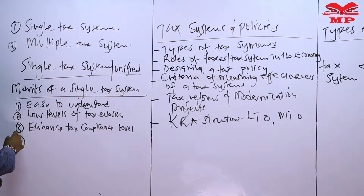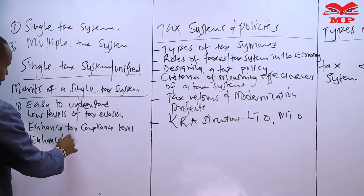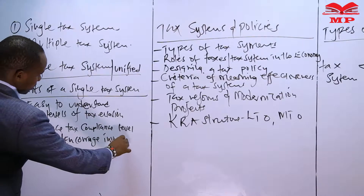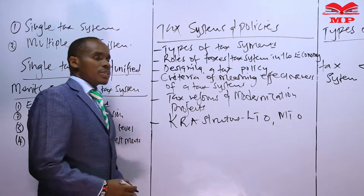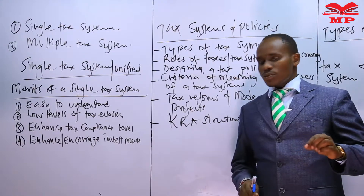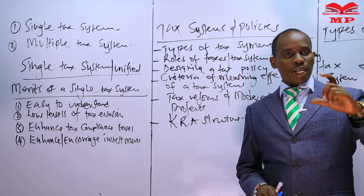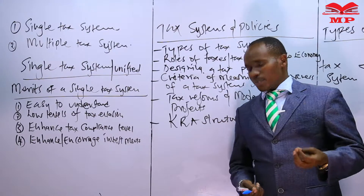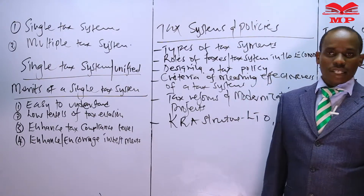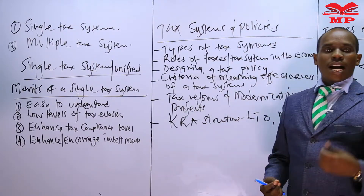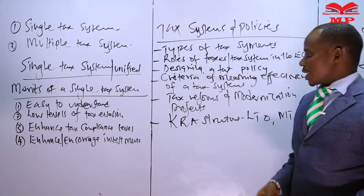Number four: a single tax system can encourage investments. In this particular case, if I am supposed to pay only one tax, then out of my income I will be left with enough money to save, consume, and invest. If I have a high propensity to invest and the government is just getting a small tax from me, then I am likely to invest as much as possible.